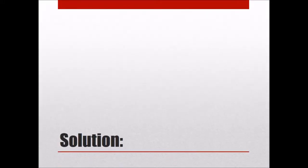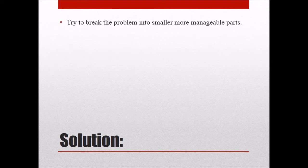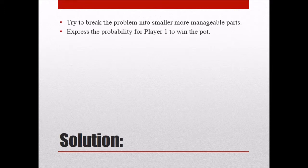So the key here is to be able to identify the types of things that you need to be doing for this problem. Unless you've been doing this for a while, for most of us we just can't see the bigger picture. So what we want to try and do is break the problem into more manageable parts. The first thing that we want to do is express the probability for player one to win the pot.